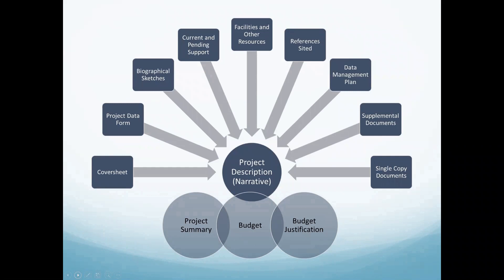So, what are we discussing today? The cover sheet, project data form, biographical sketches, current and pending support forms, facilities equipment and other resources form, references cited, data management plan, list of collaborators, and supplemental documents, which are a little bit like appendices to a proposal. Each item serves a specific purpose. We will talk you through each one and help you understand what is required. Our desire is to help you better understand these forms and how to avoid some errors frequently seen by program officers and reviewers. The careful preparation of forms contributes to a proposal that is more competitive overall.